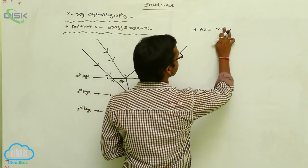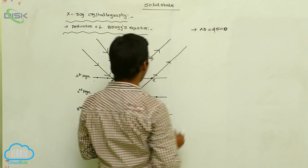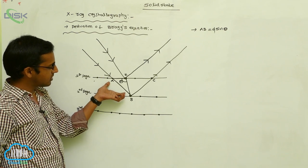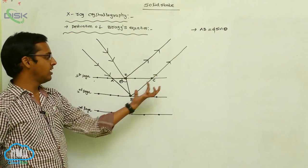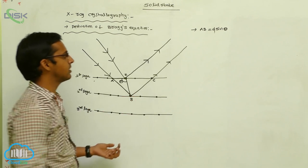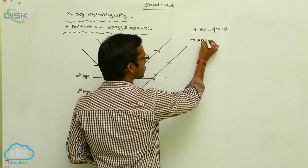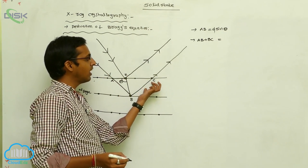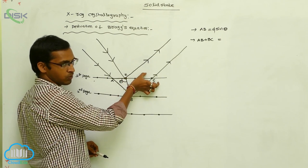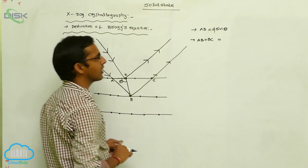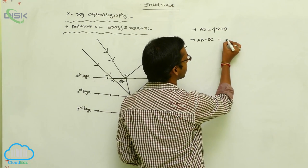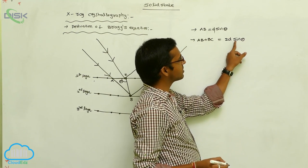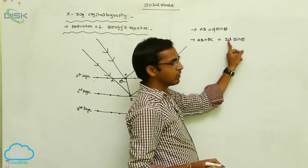So with distance, that means D sine theta. The first layer is your first phase and the second layer is your second phase. The AB distance is equal to BC distance. The distance AB plus BC — the extra distance traveled through a layer — equals 2D sine theta.